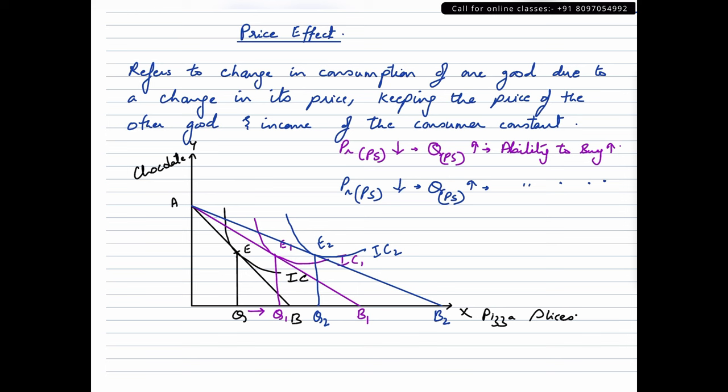So the movement of equilibrium from E to E1 and to E2 is what we call as price effect. When the price of commodity X fell, consumer was able to buy more of commodity X or pizza slices in our case. In this case, the budget line rotated from AB to AB1 first and from AB1 to AB2 the second time.